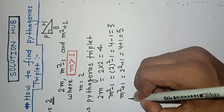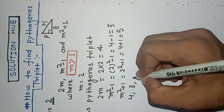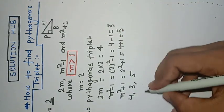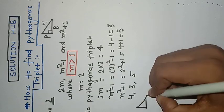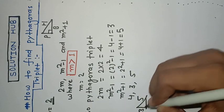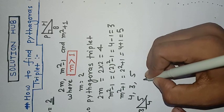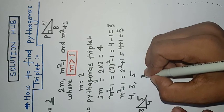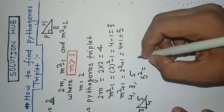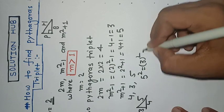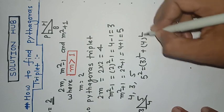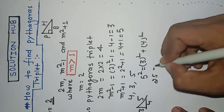So we get the triplets are 4, 3, 5. Now we should check it: 5 squared must be equal to 3 squared plus 4 squared. 5 squared is equal to 25.